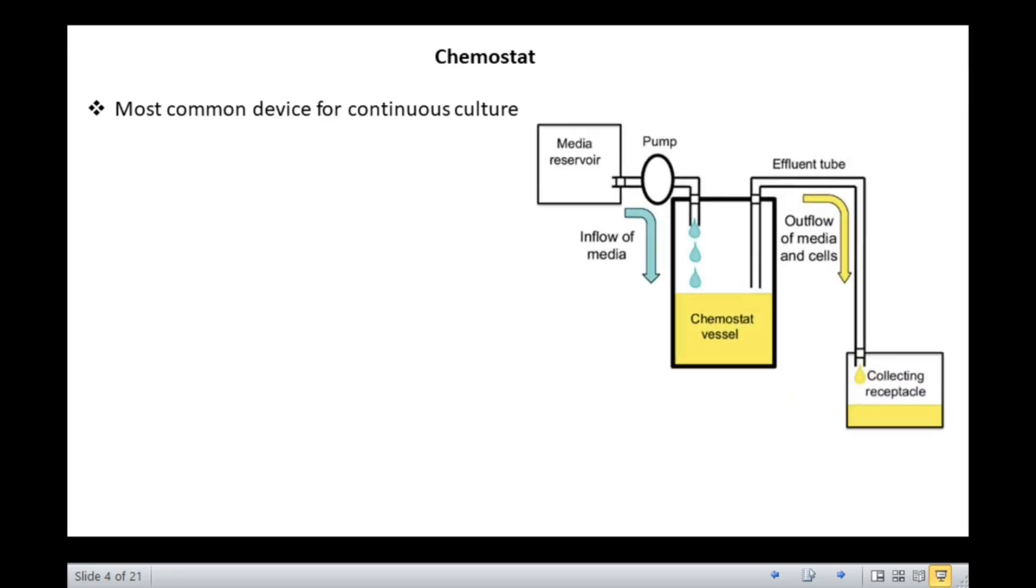The most common device for continuous culture is a chemostat. This can be used to maintain a bacterial population at a constant density, a situation that is in many ways more similar to bacterial growth in natural environments. As can be seen in this figure, in a chemostat, the growth chamber is connected to a reservoir of sterile medium.